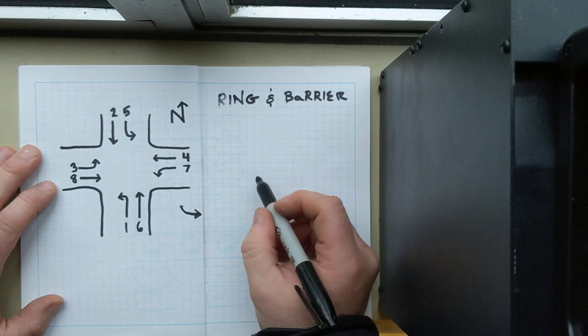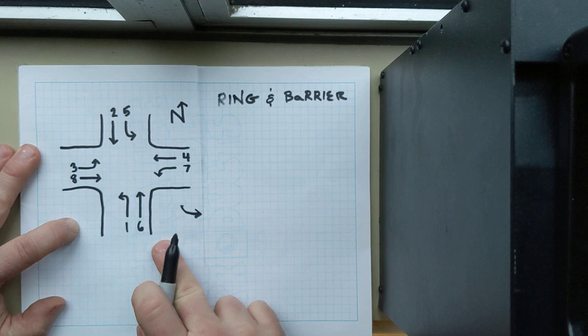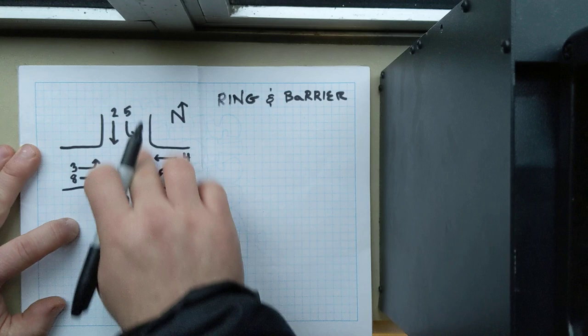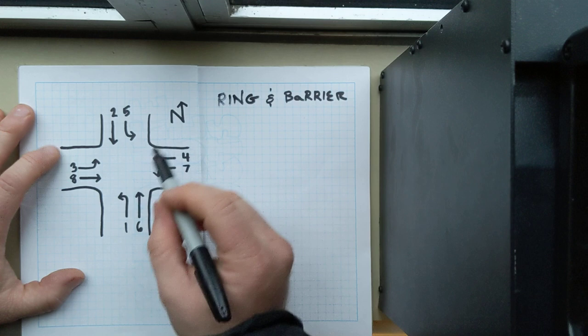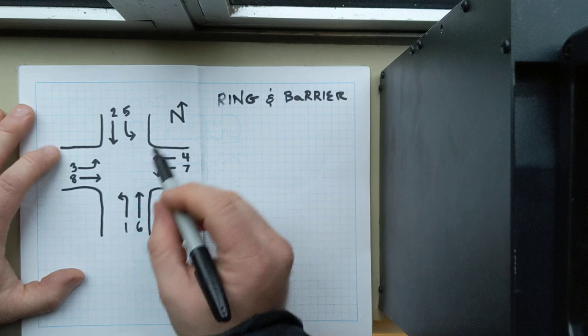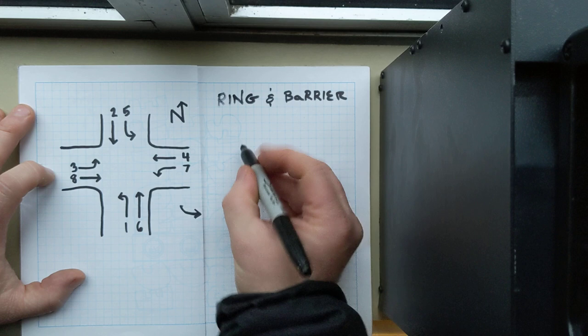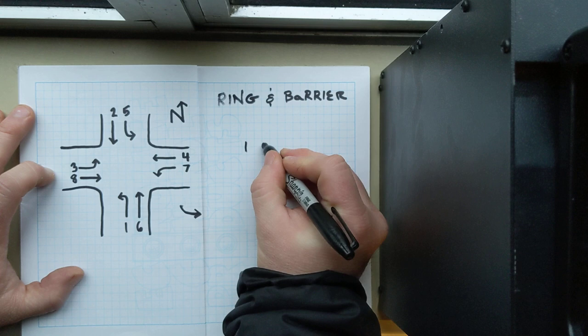What ring and barrier is about is talking about how we sequence these phases at an intersection, basically so that conflicting phases never run together logically. So when we're talking about how we sequence this intersection so that cars that can run together on paper can only run together logically also.